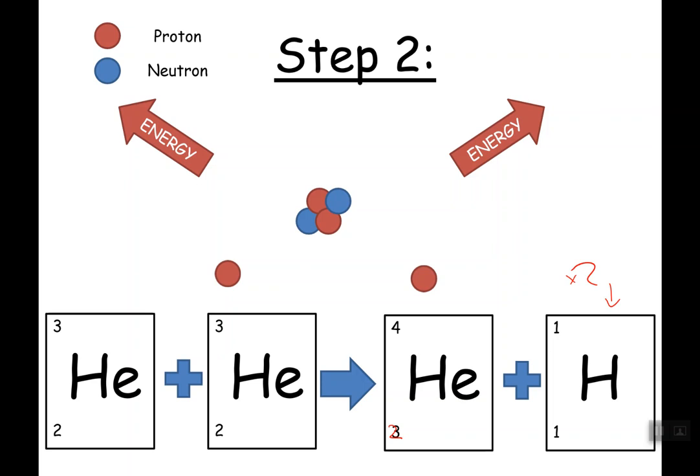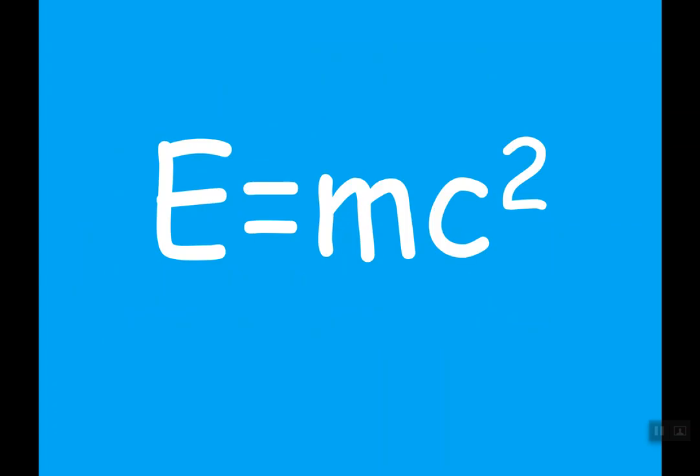Where does the energy in fusion actually come from? It's the same as fission: some of the mass of the protons and neutrons is converted into energy when they combine. If you measure the mass of separate protons and neutrons and then measure the mass of the resulting nucleus, the nucleus is lighter — some mass has been converted to energy. Einstein's famous equation E=mc² lets you calculate this: mass multiplied by the speed of light squared (3×10⁸ m/s) gives the equivalent energy released.